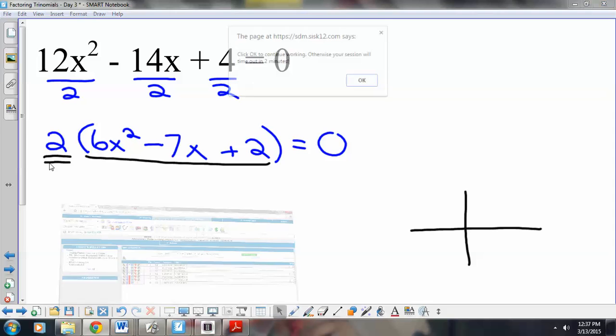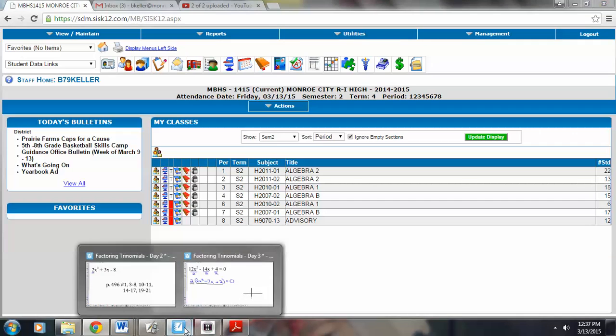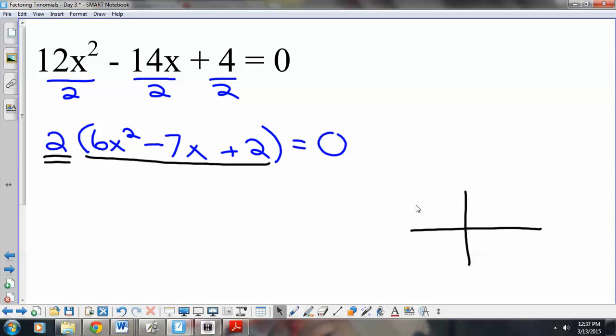Now, 6x squared is going to go in the top left hand box. And, positive 2 is going to go in the bottom right hand box. Nothing is different. We're still looking for 2 numbers that multiply to 12. In fact, 12 by 6 times 2.